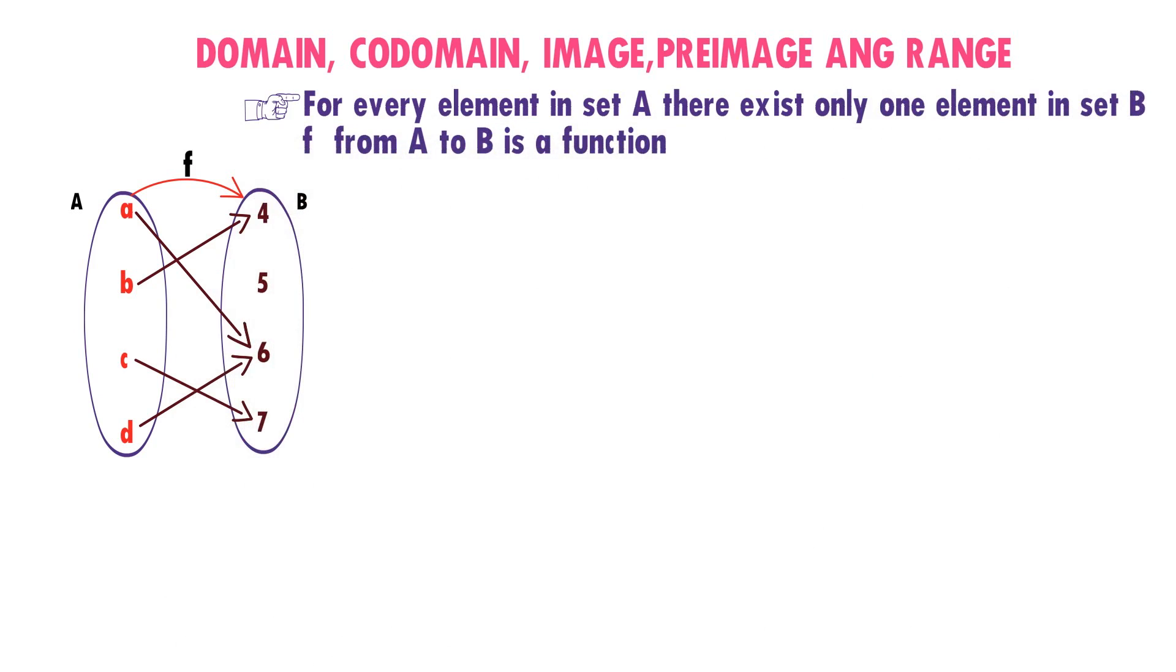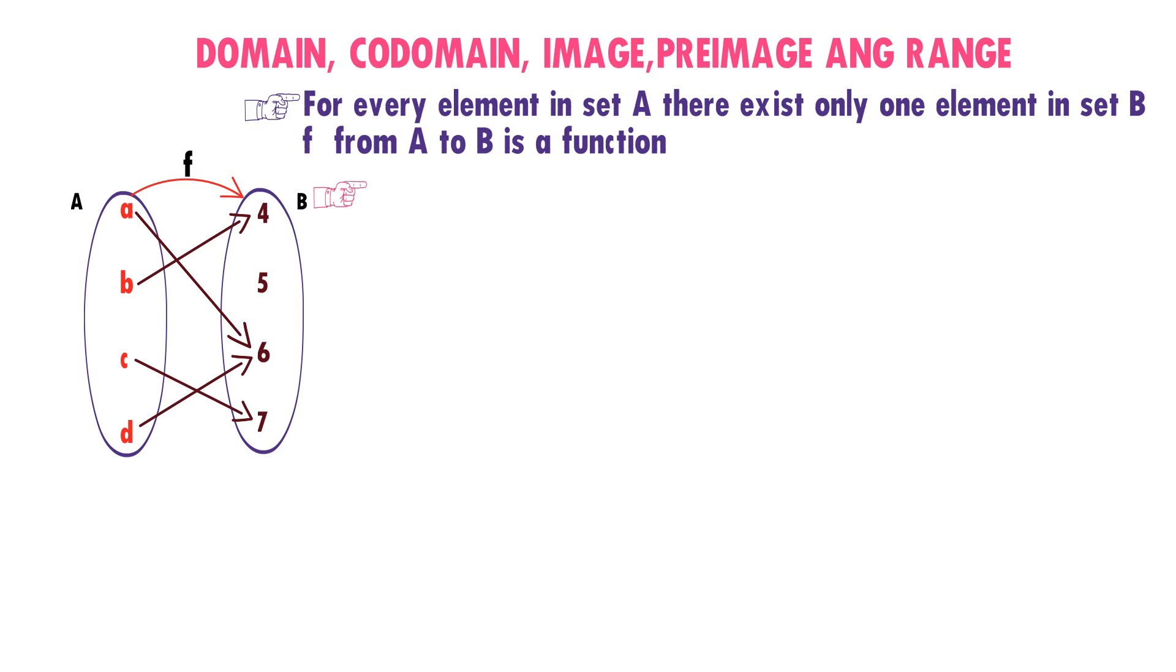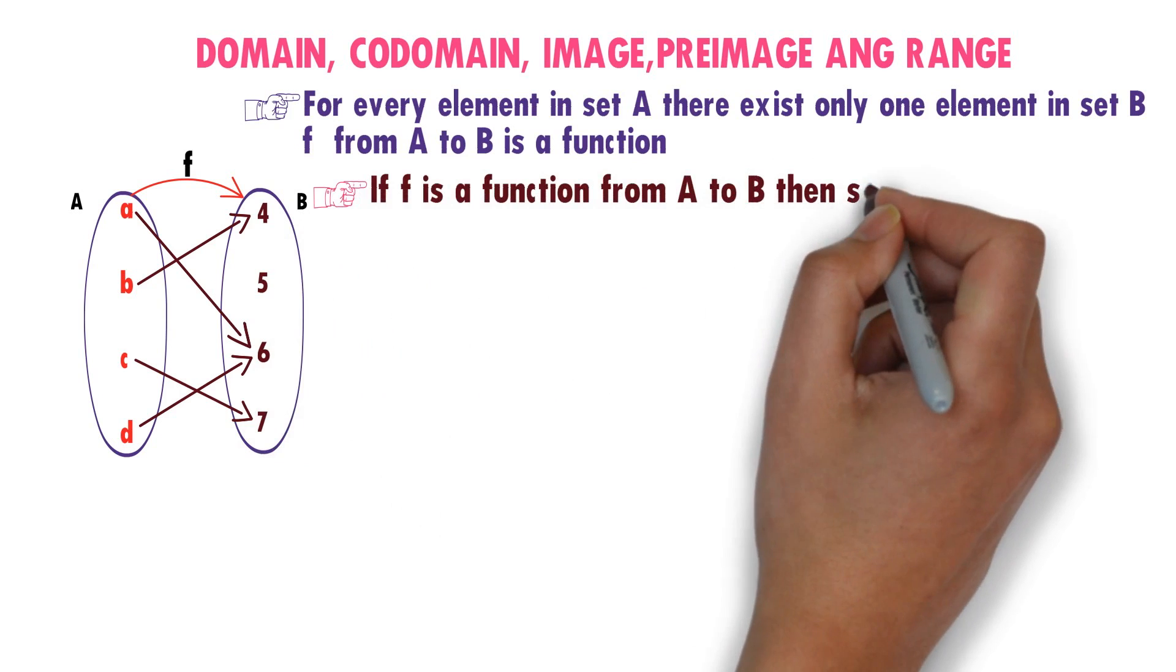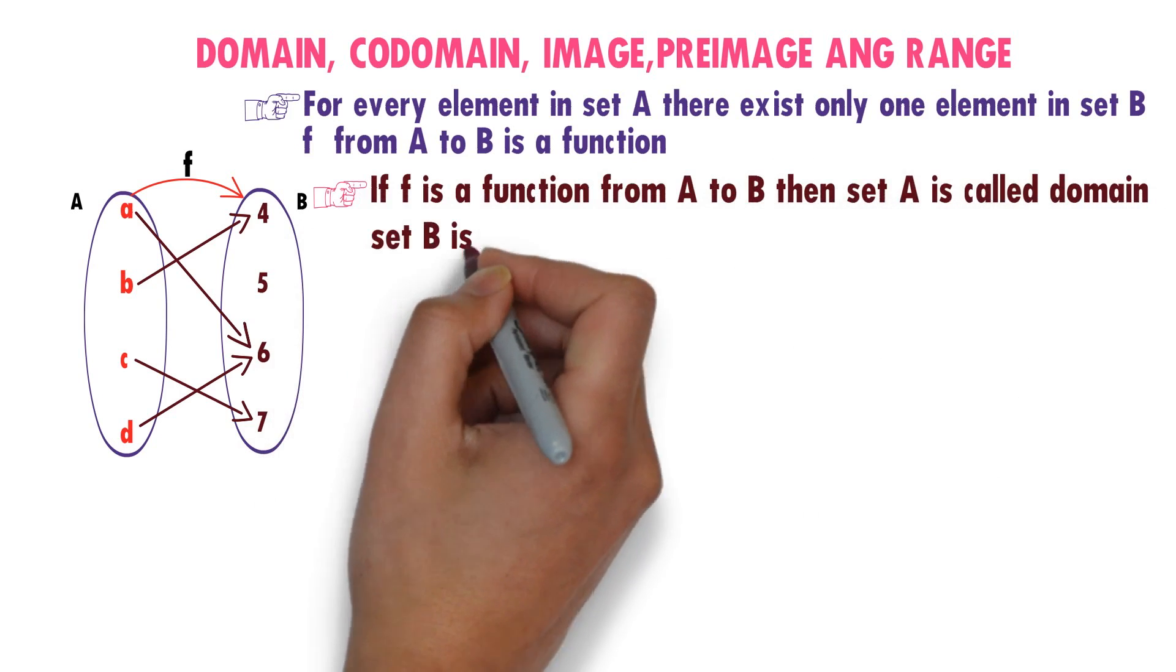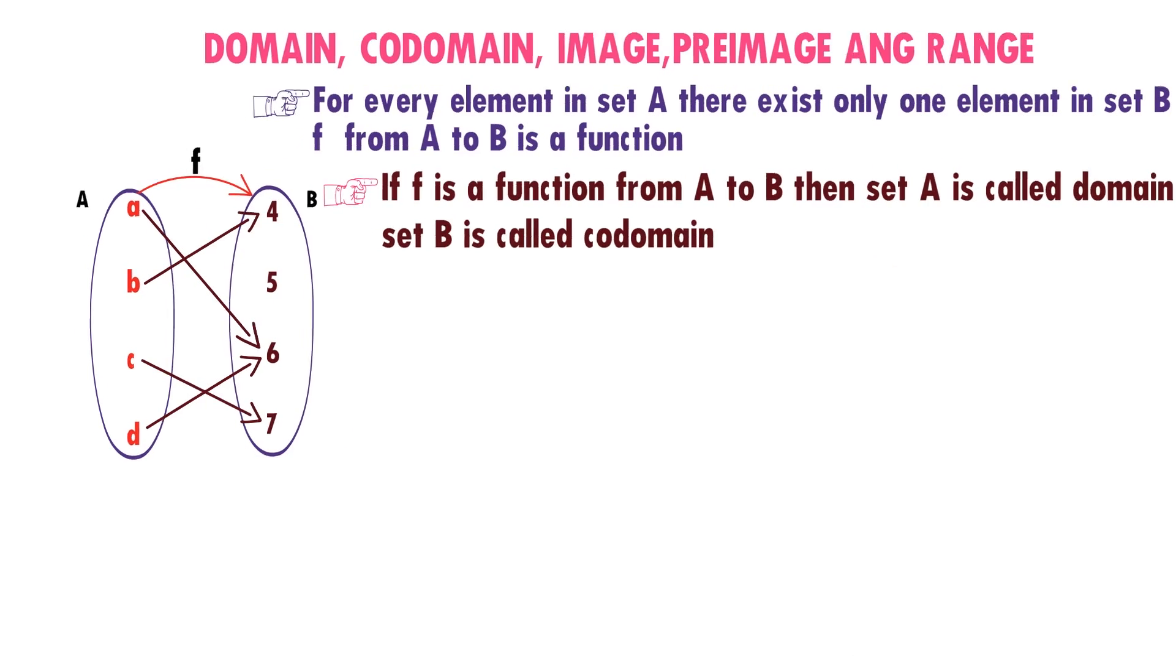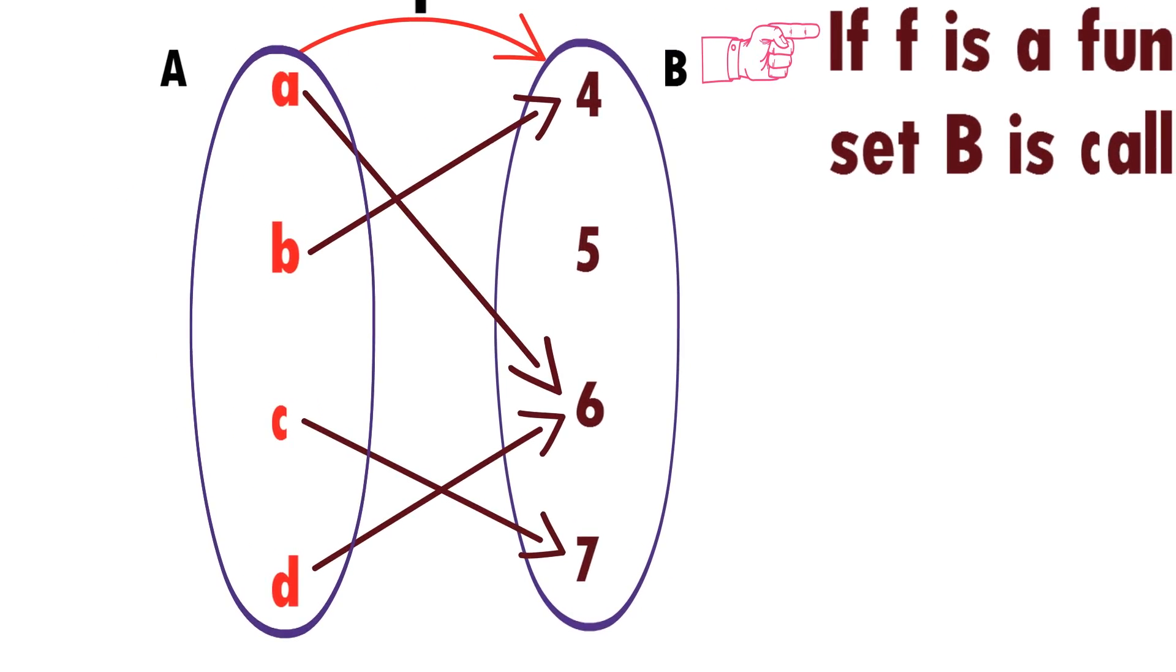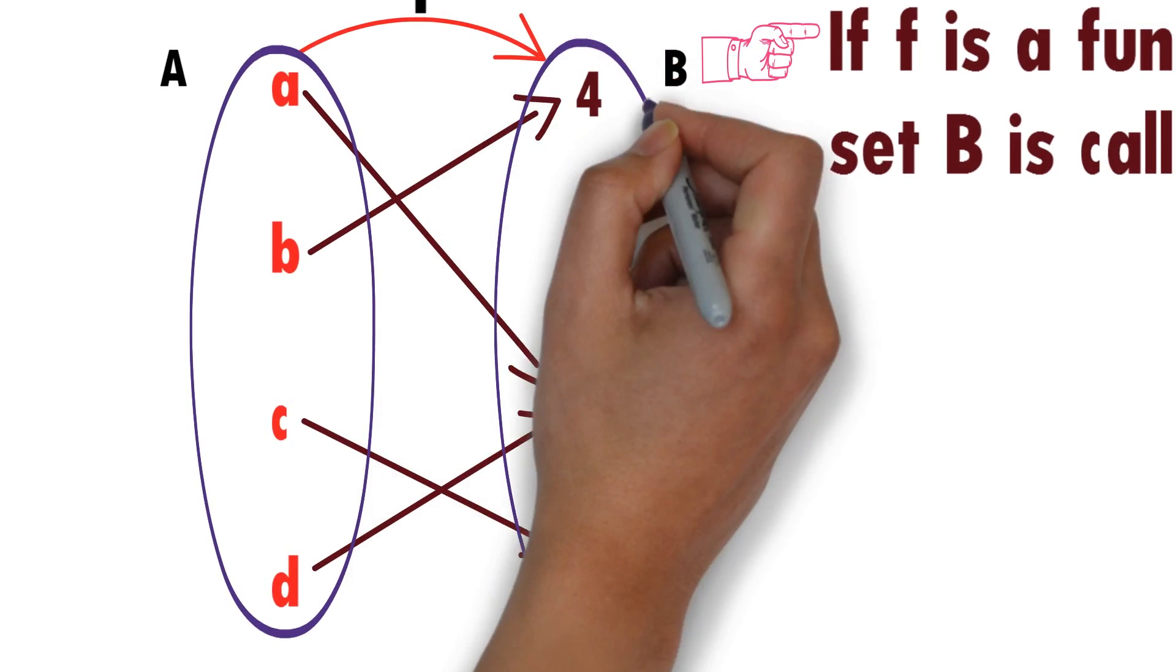About function we already learned in last class. If F is a function from A to B, then set A is called Domain and set B is called Codomain. You observe set A. This is Domain. Observe this set B. This is Codomain.